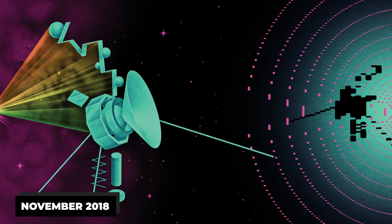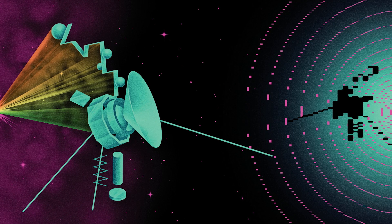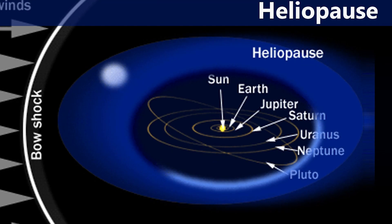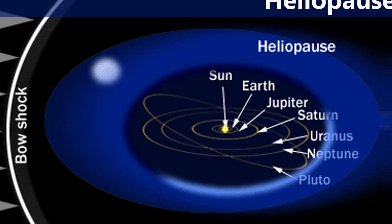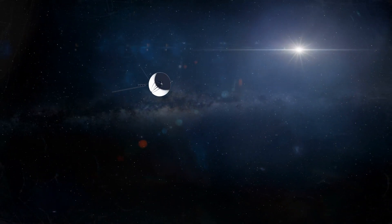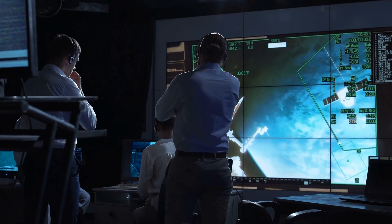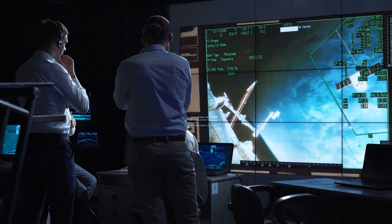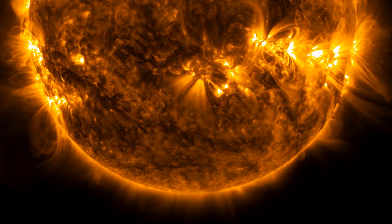In November 2018, Voyager 2 embarked on its extraordinary journey to the interstellar border, reaching the heliopause, 120 astronomical units from Earth, the same distance Voyager 1 had reached six years prior. Scientists were again perplexed by the lack of magnetic field changes, defying theoretical models and adding another puzzle to the mix.